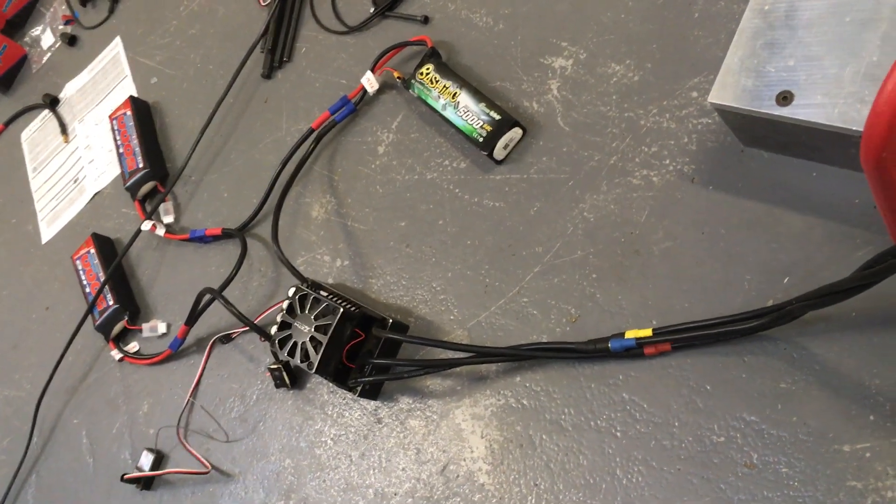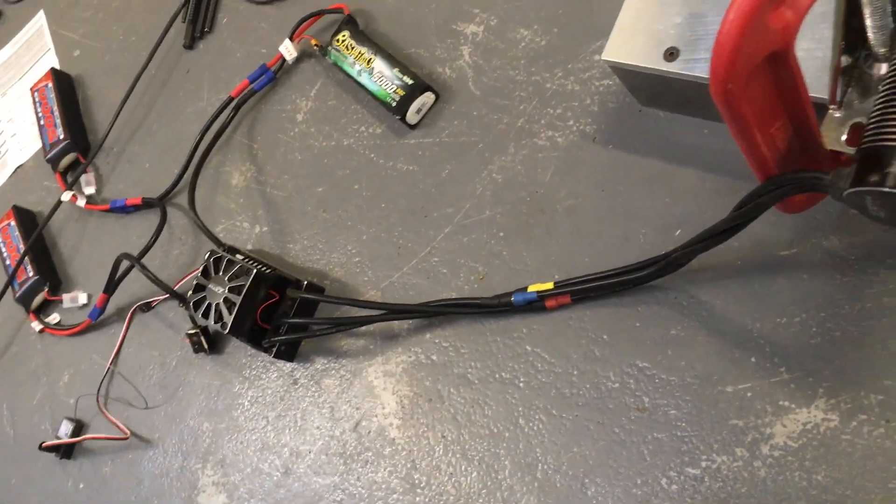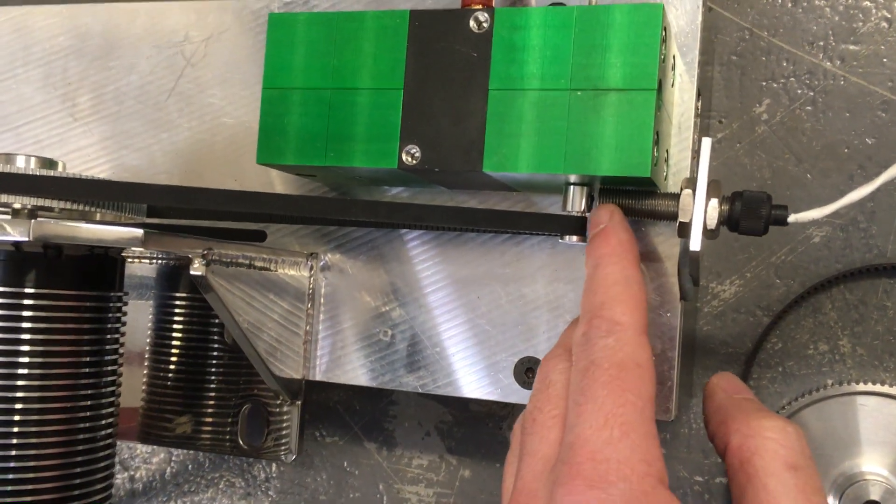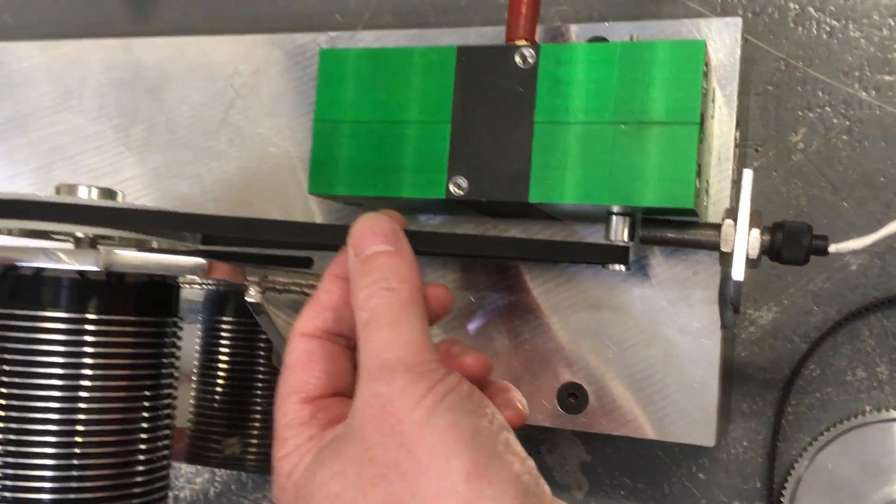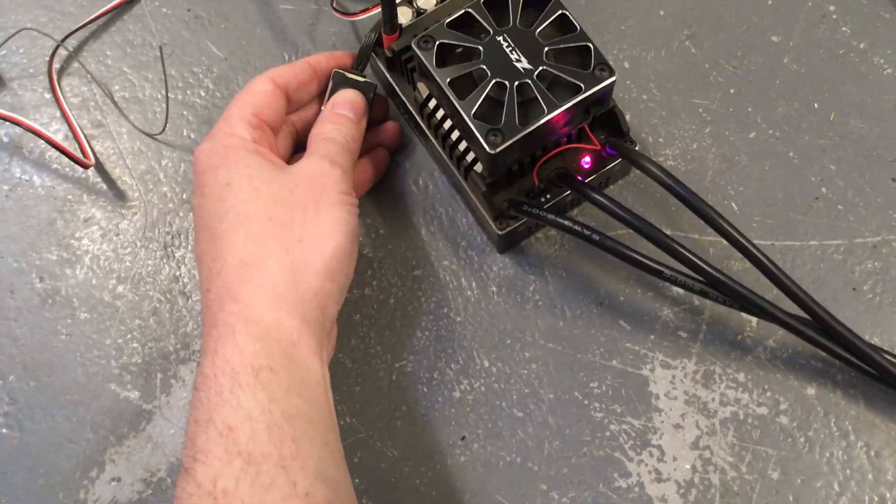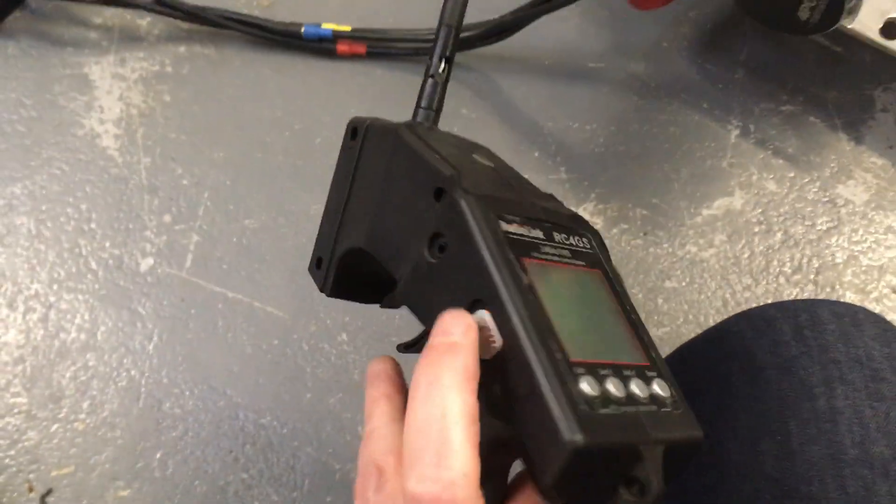We've got three batteries so it's 9s, and we've got the pickup from the grub screw on the belt. So just turn the on and turn the transmitter on.